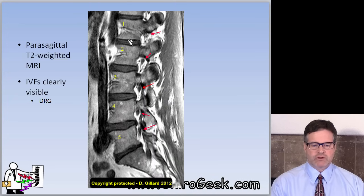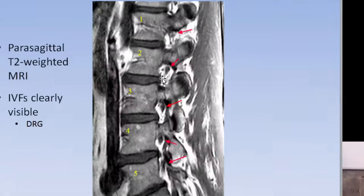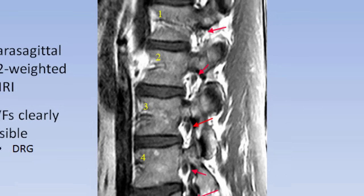This is a parasagittal view — a cut far lateral, right through the intervertebral foramen. You can see this hole here, which is packed in fat. It's a T1-weighted image, so fat appears quite white. You can see the exiting L2 nerve root, the exiting L3 nerve root, the exiting L4 nerve root, and the exiting L5 nerve root.